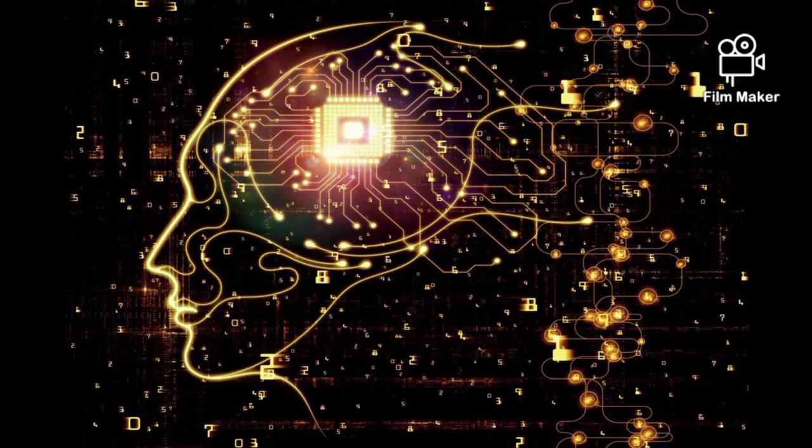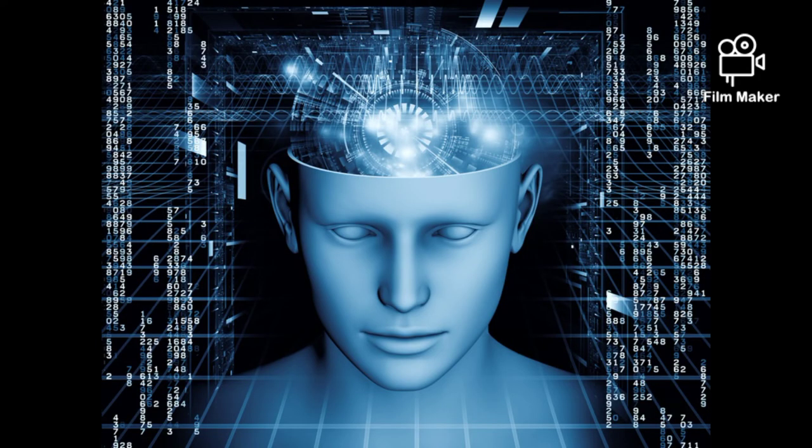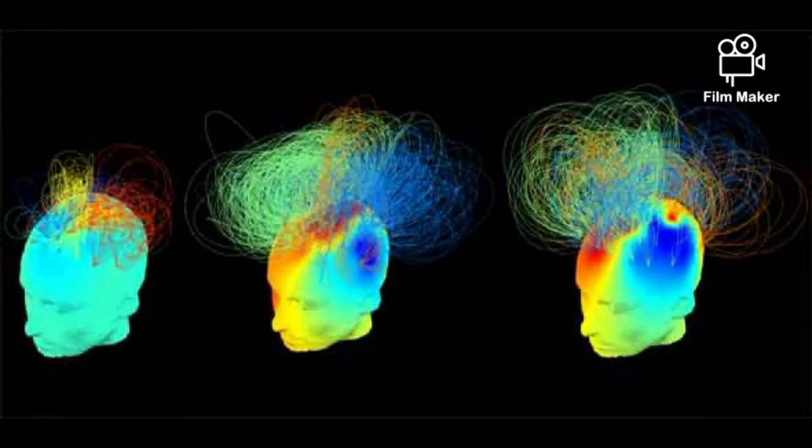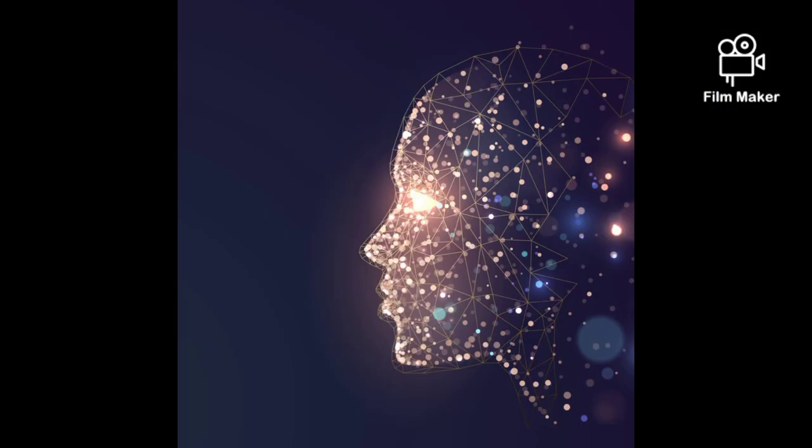The software functions accordingly and directs the body parts to do actions according to what the software wants. The software coordinates the body parts. Consciousness is really software that controls all the body parts.